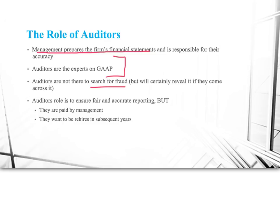Auditors are there to help management prepare financial statements to be as fair and accurate as possible. But there's a big but: management pays the auditors. Auditors make their money by auditing companies, and they not only want to audit this year but next year and for many years to come. That creates a conflict of interest inherent in the auditing position. For the most part, auditors are committed to doing the right thing, but they also have a financial incentive to allow themselves to be pushed as far as they can without going over the line.